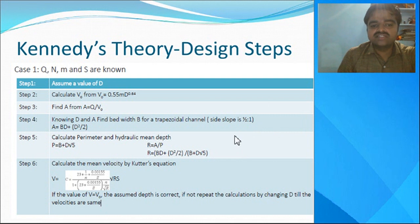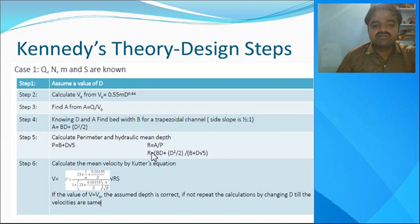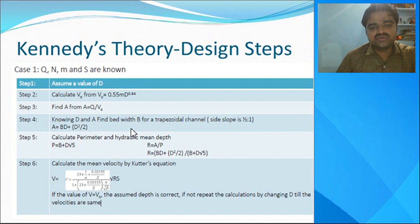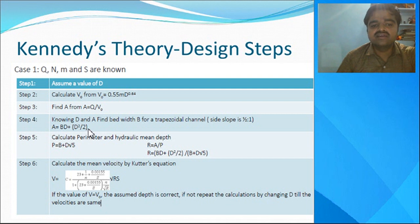Since Q is the discharge and V₀ has been calculated, you can find the cross-sectional area of the canal. Then, knowing d and area, find the bed width b for a trapezoidal channel using: A = b×d + d²/2. Area is already known and d is known, so you can directly calculate b, the base width of the canal.